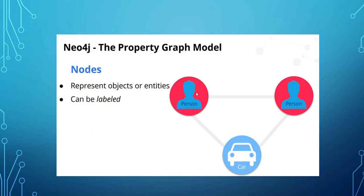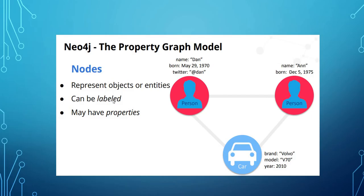The properties of nodes — a node can be a person, thing, or object; it represents objects or entities. Nodes can be labeled, so when we want to query, we can query using the label itself. That is the main importance of labeling each node. Nodes can have any number of properties, and it is not mandatory that each node has the same number of properties. For example, node 1 has three properties and node 2 has only two properties.